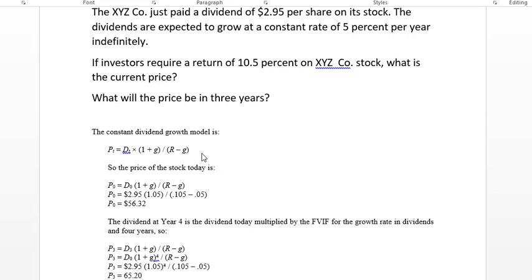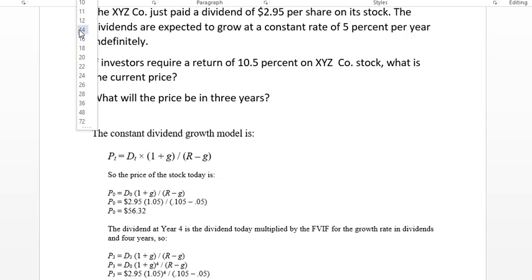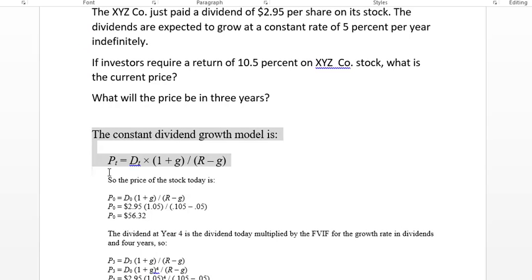Well the way that we solve this is using the constant dividend growth model. It's a relatively simple model. So we are looking for the price with time. So this is P sub T, that's what we're looking for.